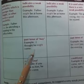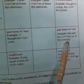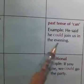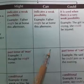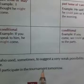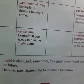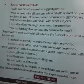Might is also used as the past tense of may: 'I thought he might come if you speak to him, he might come.' Could is used as the past tense of can: 'He said he could join us in the evening.' When the chances are more, we use may; when the possibilities are less, we use might or can. Could is also used sometimes to suggest a weak possibility in the future.